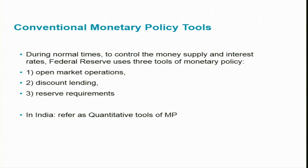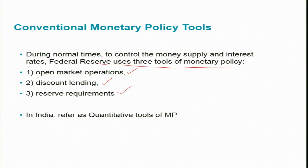During normal times, the Federal Reserve uses mainly three conventional tools to control the money supply and interest rates: open market operations, discount lending, and reserve requirements. In India, these are referred to as quantitative tools of monetary policy.